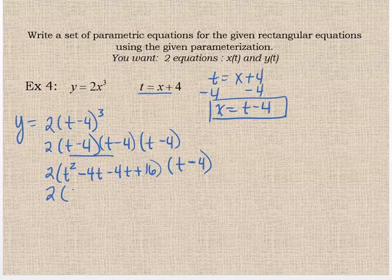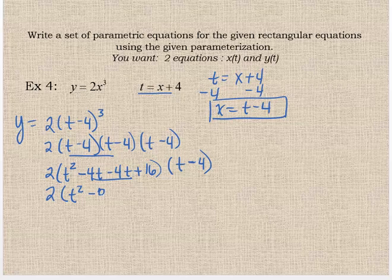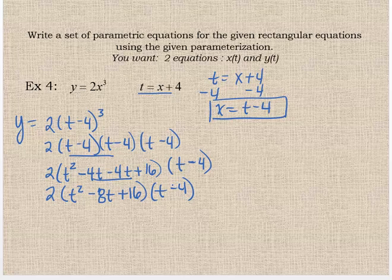t squared minus four t minus four t plus 16. And that extra t minus four is still hanging on out there. Let's clean that up. That's minus eight t plus 16 times t minus four. I still need to multiply these two together before I distribute that two. How do you do that? Well, you're going to do a bigger box.